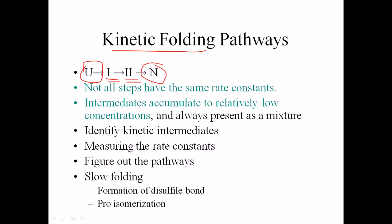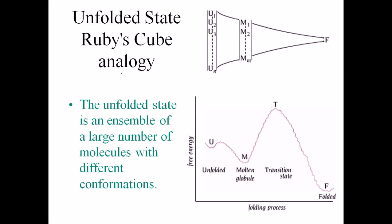We find higher concentrations of unfolded protein and higher concentrations of native protein in the environment, but a very low amount of the transition state or molten globule state. So whenever we look at a mixture, we see both unfolded and native protein, but very little protein in the transient molten globule state.